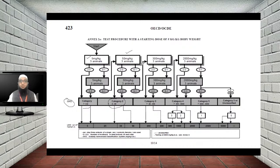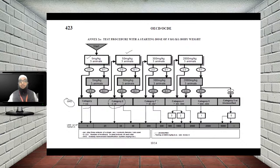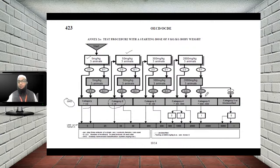Based on this step-by-step approach, the drug can be classified from GHS category 1 (toxic dose 0–5 mg/kg) through category 2 (5–50 mg/kg), category 3 (50–300 mg/kg), category 4 (300–2000 mg/kg), and category 5 (more than 2000 mg/kg or 2000–5000 mg/kg). If no signs appear even at 2000 mg/kg, the drug is considered relatively safe.